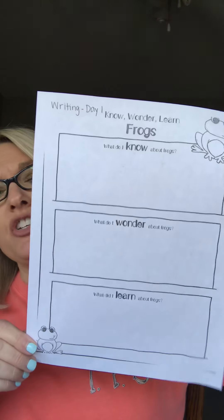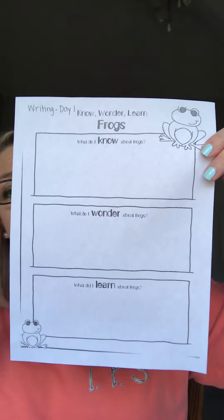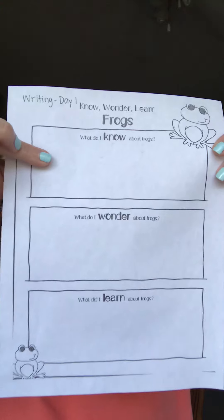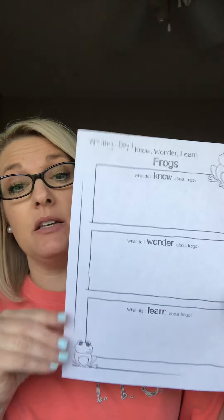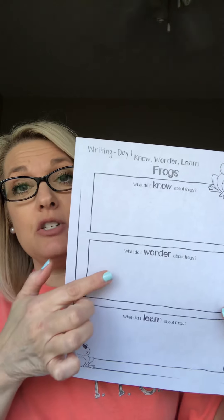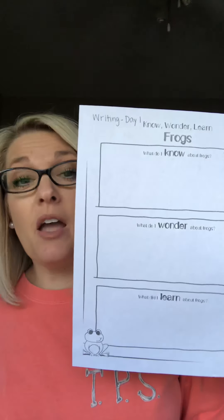Then for your writing that day, you're going to take this paper, which is a KWL chart. We do these all the time at school. You're going to fill in each of the blanks: what you already know about frogs, what you wonder about frogs, and what you learn about frogs. You can fill in these three boxes with two sentences, two sentences, two sentences about each of those things — your KWL chart.